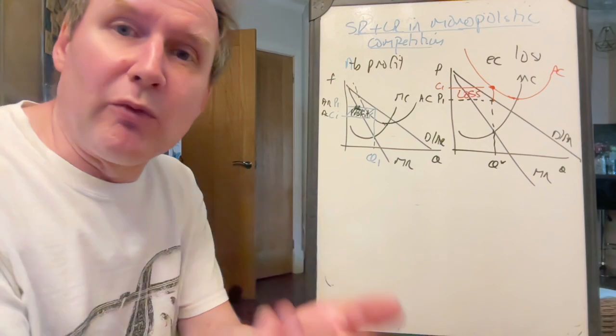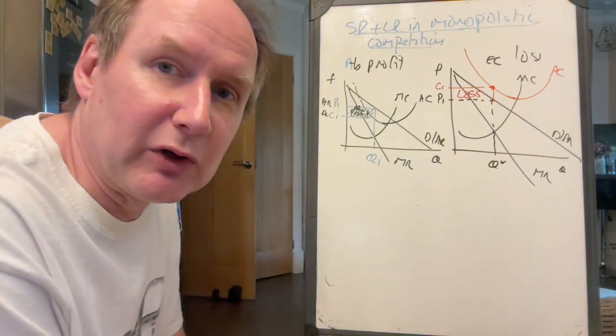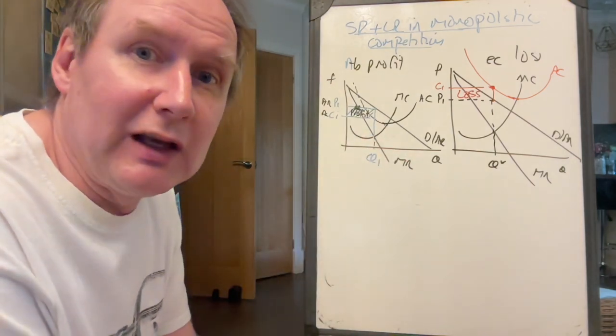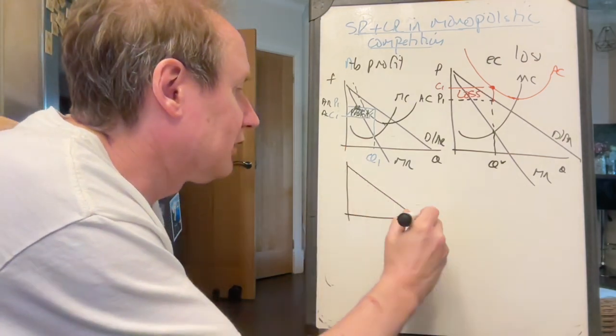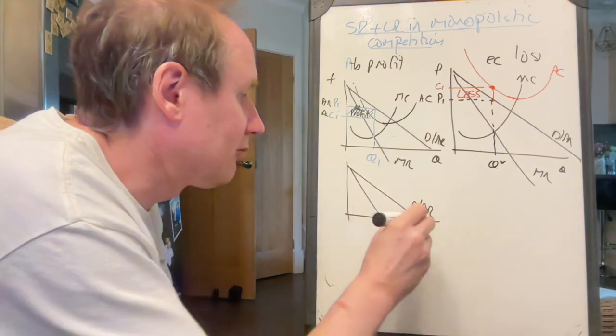So let's talk about what's going to happen in the long run, then. In the long run, we said that new firms are going to enter this market. So what happens to our firm? And the answer is, it's going to lose market share. So what's going to happen to our firm is that originally, that was the demand for this firm and its marginal revenue.